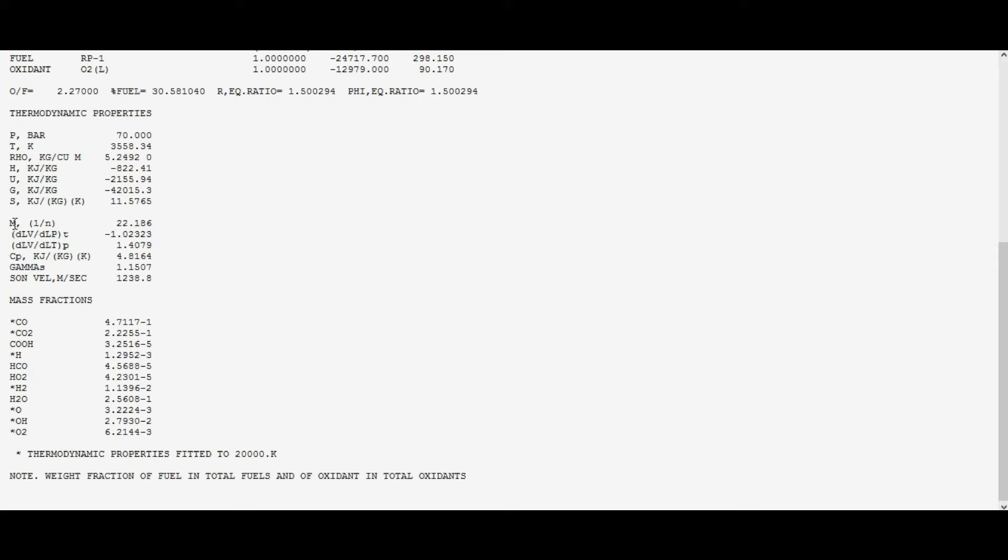Skip these guys here. This is the molecular weight, 22.186 kilograms per kilomole. And if we go down here to gamma, that's the specific heat ratio, 1.1507. So those are the values we're going to be using in this example.